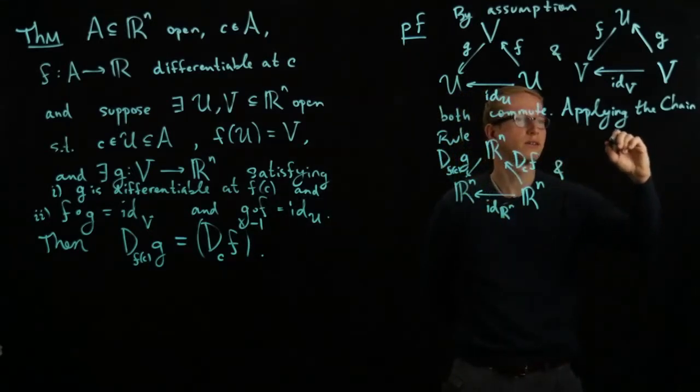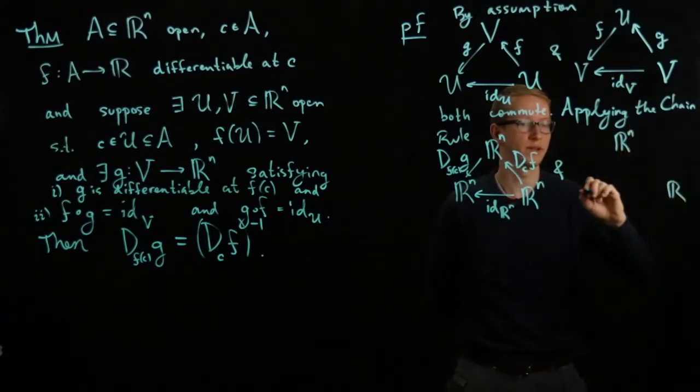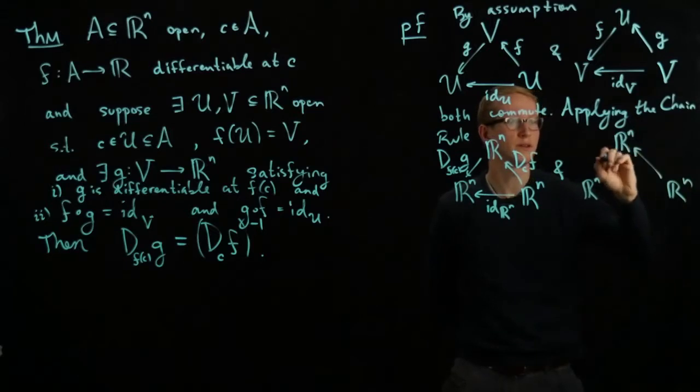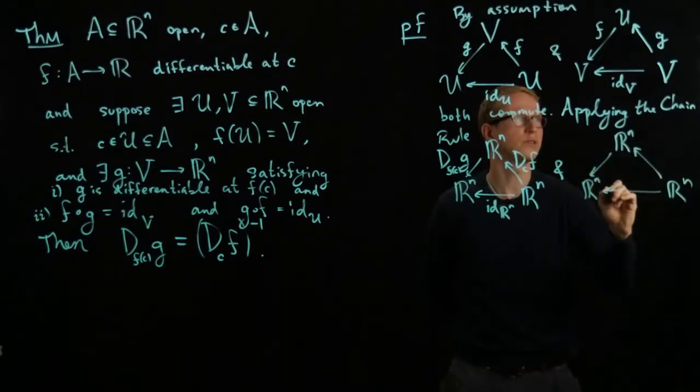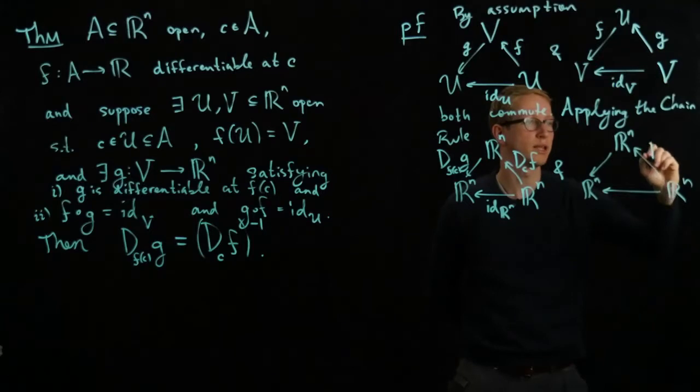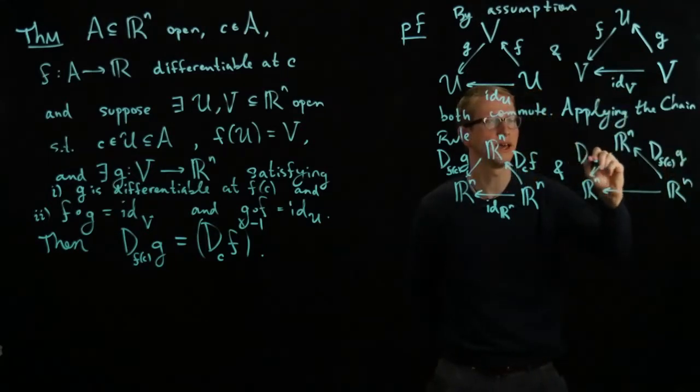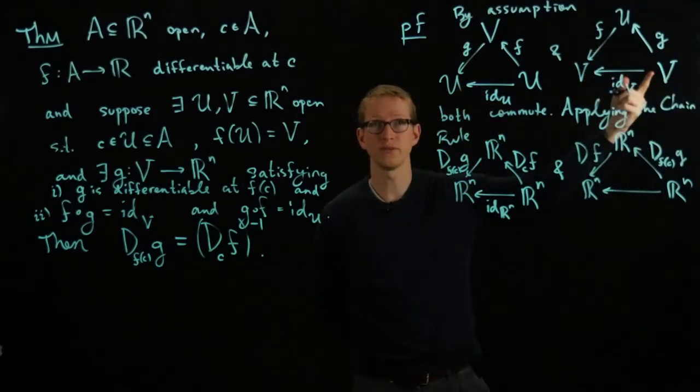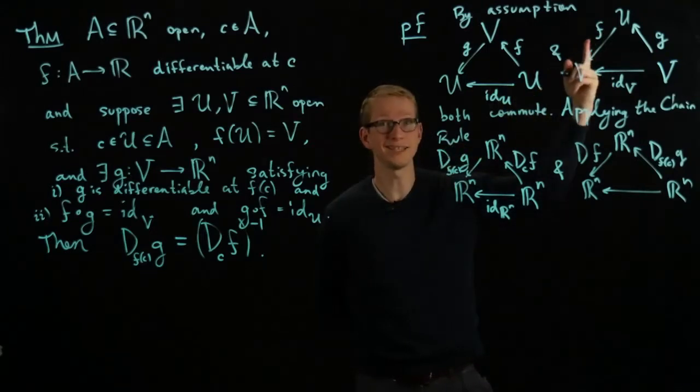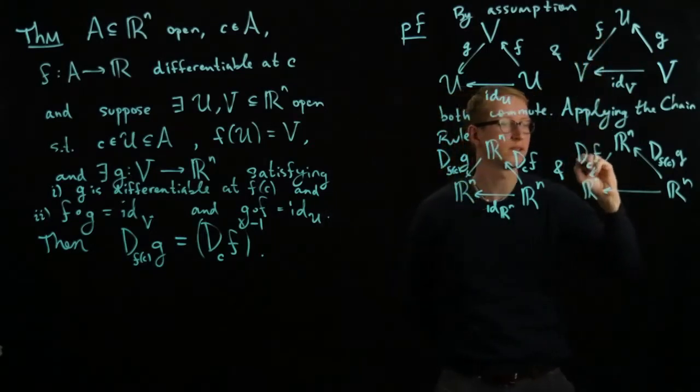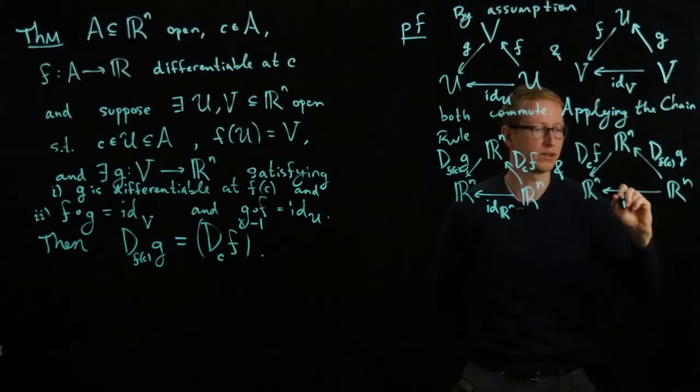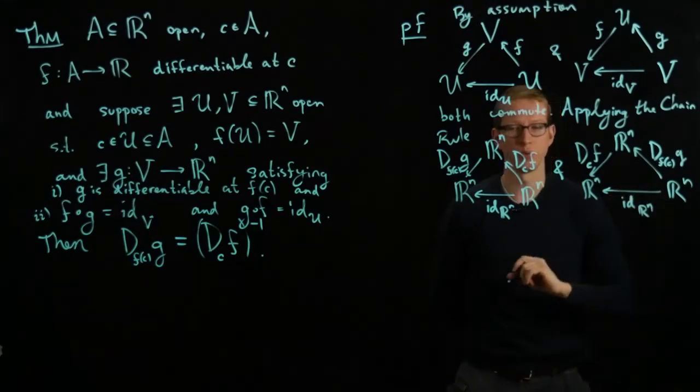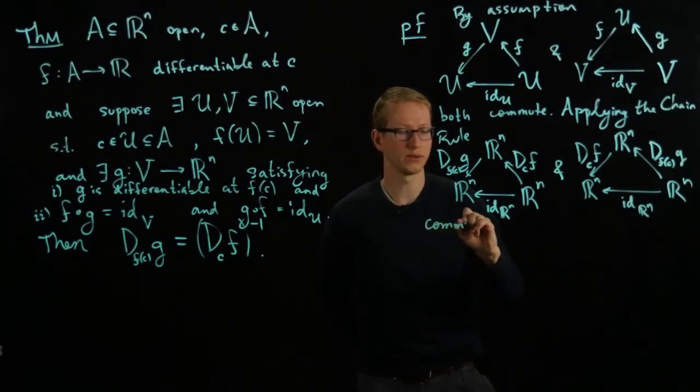So this and similarly we have another diagram here by applying the differential and this time the differential is applied to F, C, G and here we have D, F. Now here we're looking at the image of F of C under G but the image of F of C under G because F and G are inverses is C again so this is still D, C, F and the same argument here tells us that the identity function is at the bottom. So the chain rule says that these two diagrams commute.